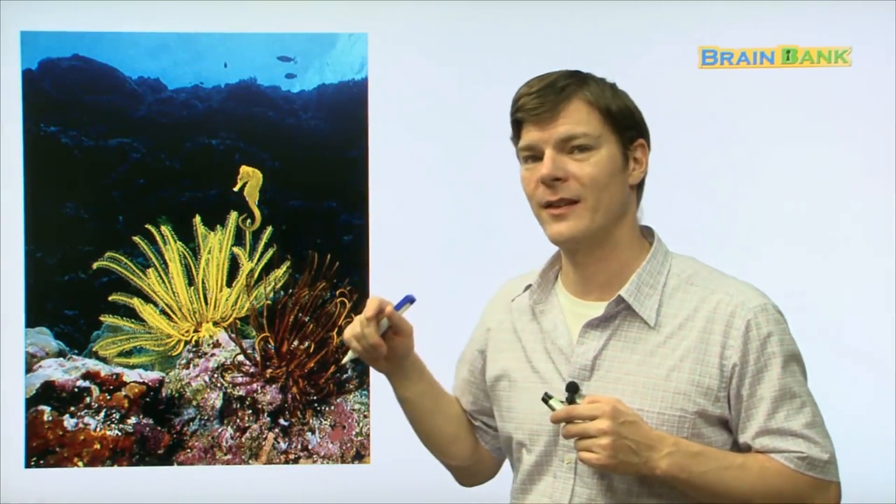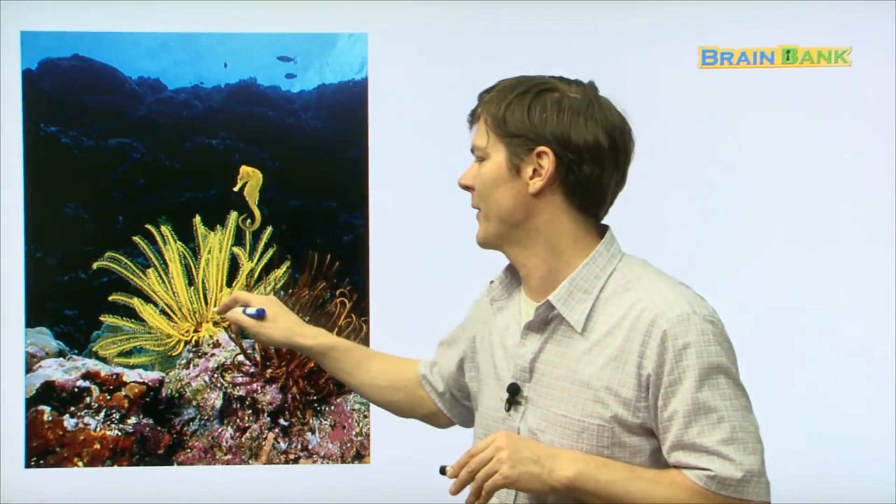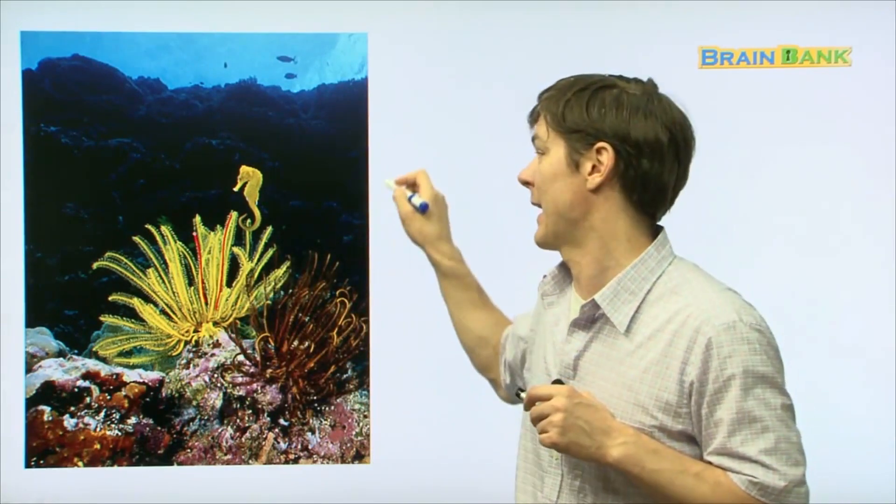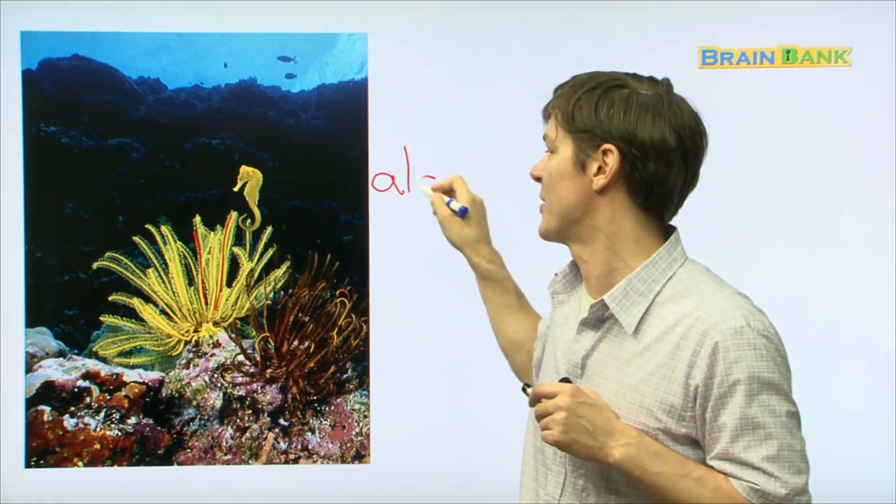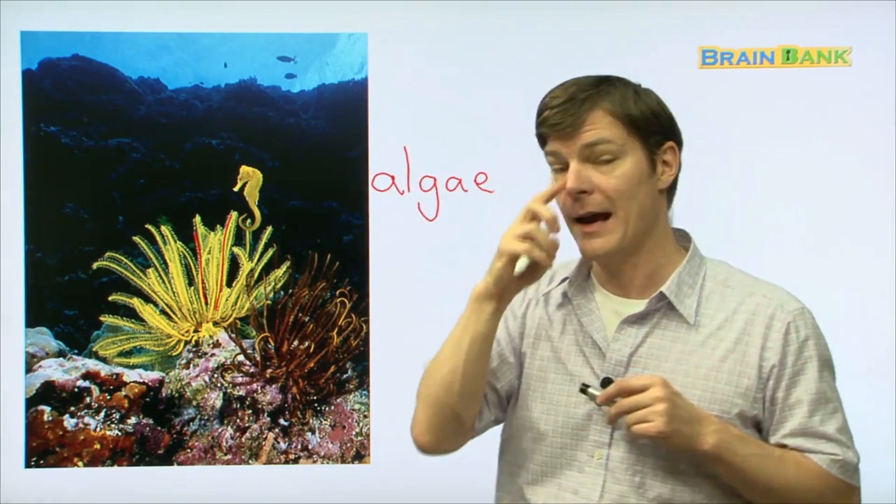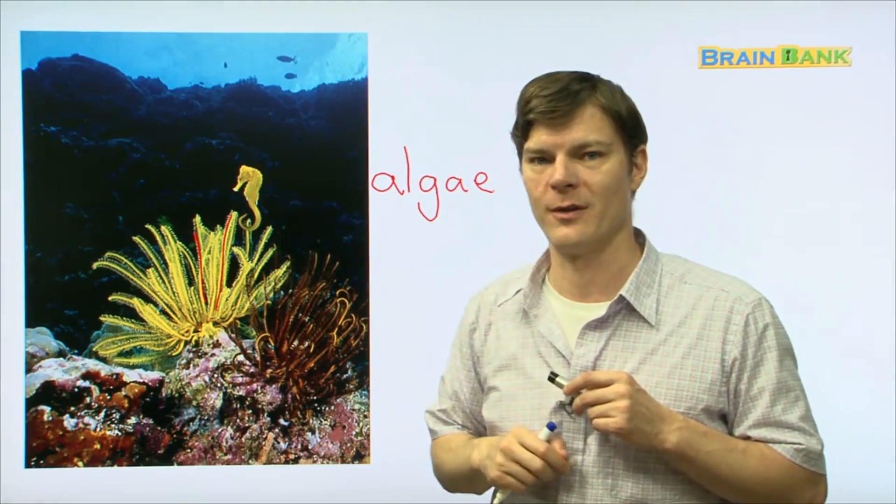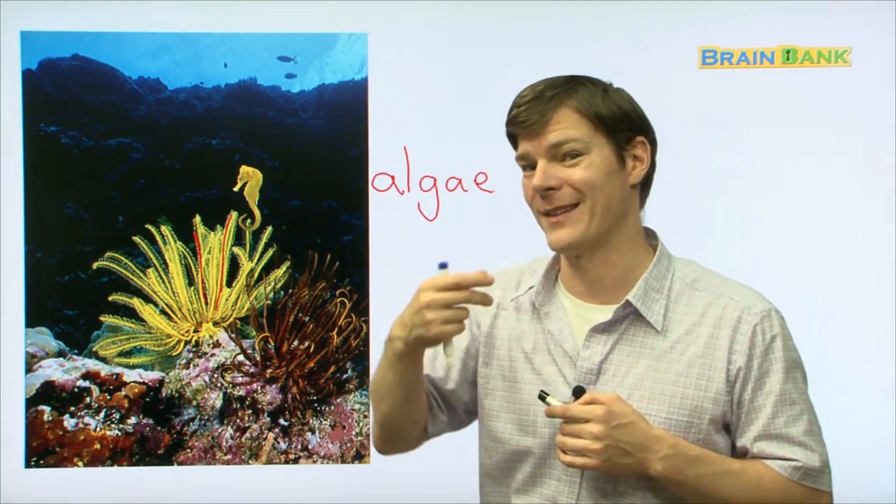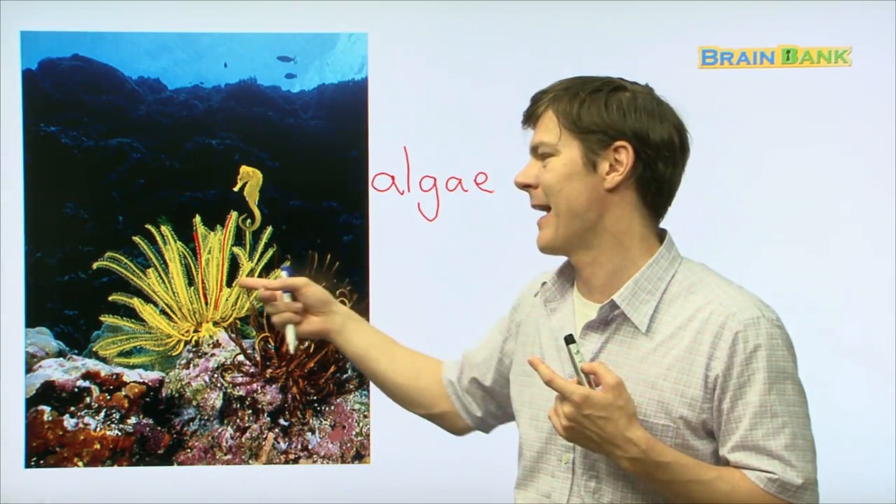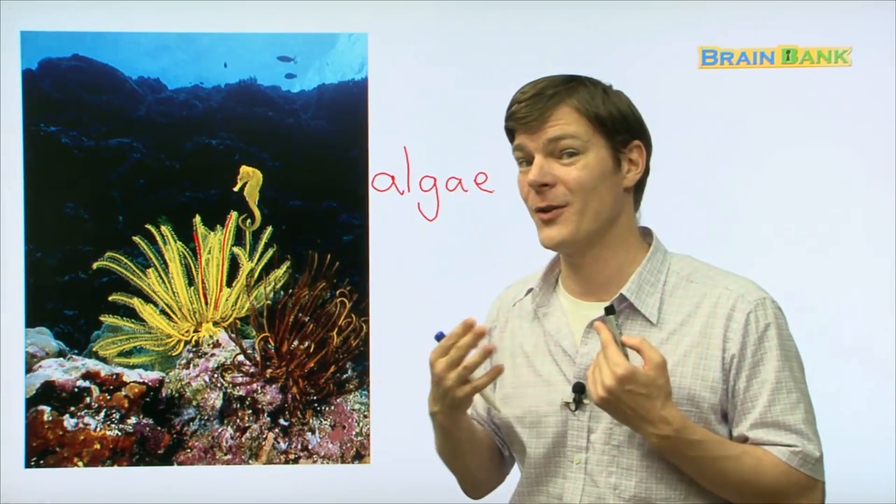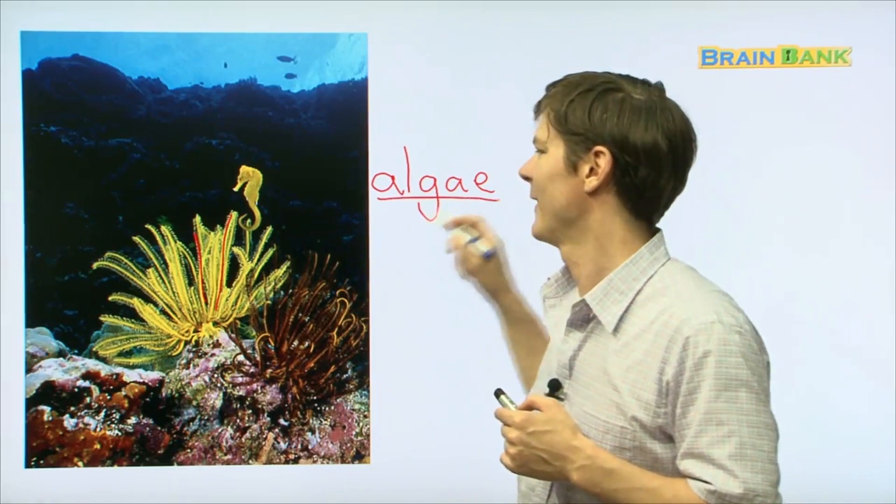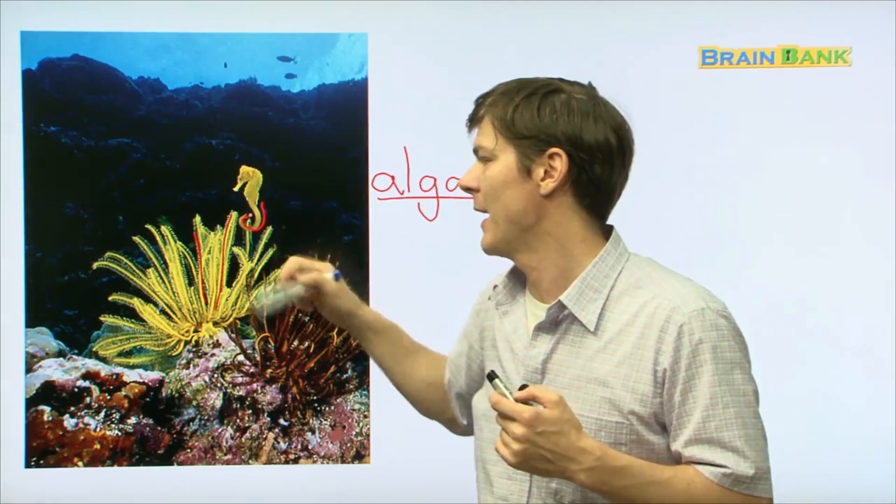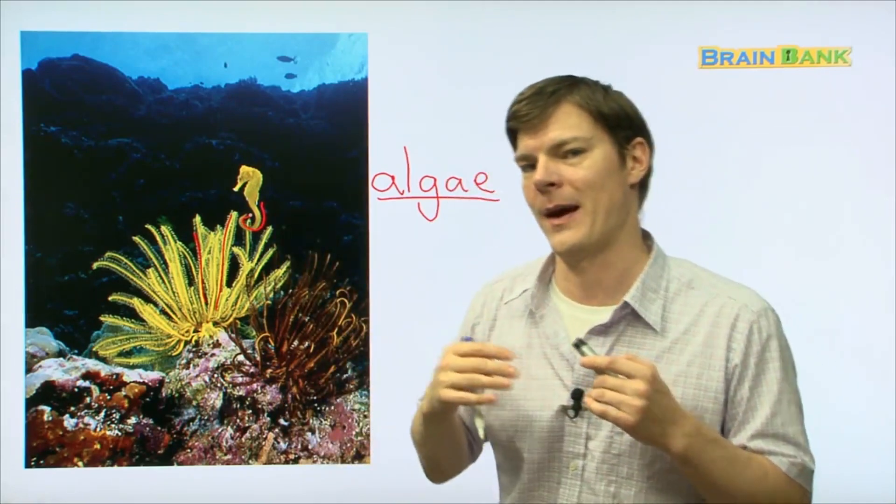And there he is, swimming around these little things right here. These are not really coral, but these are like algae. Algae is kind of like seaweed or kind of like kim, what we eat at dinner with our rice. Seahorses really love algae because they cling onto them with their tails. And they just like to sway back and forth, back and forth.